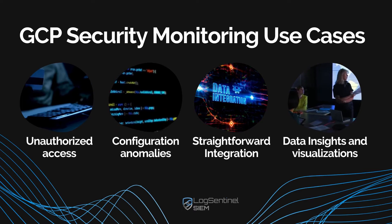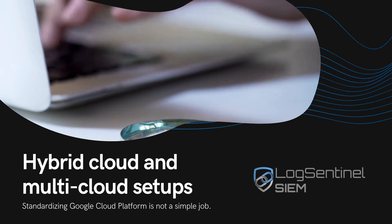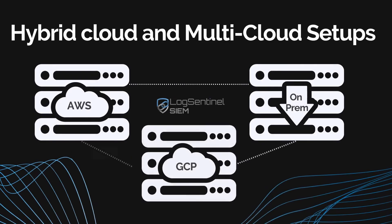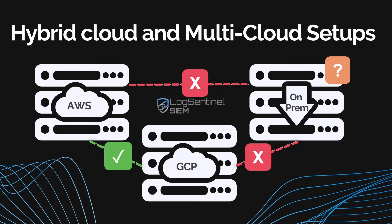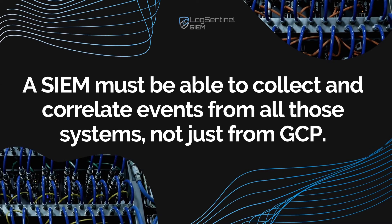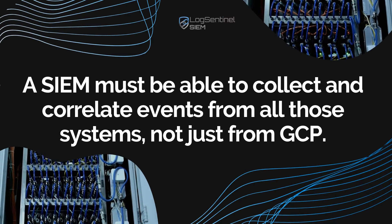A SIEM would be able to cover the following scenarios. The first scenario is Hybrid Cloud and Multi-Cloud Setups. While it's great to standardize on Google Cloud Platform, it's never that simple. Different departments may have chosen different providers over the years, with one running on AWS and the other on Google Cloud Platform. Most importantly, there's always some leftover on-premise resource from the before-cloud era — that might be an organization's Active Directory, SAP, or a legacy accounting software that just doesn't run anywhere else. A SIEM would be able to collect and correlate events from all those systems, not just those from the Google Cloud Platform.